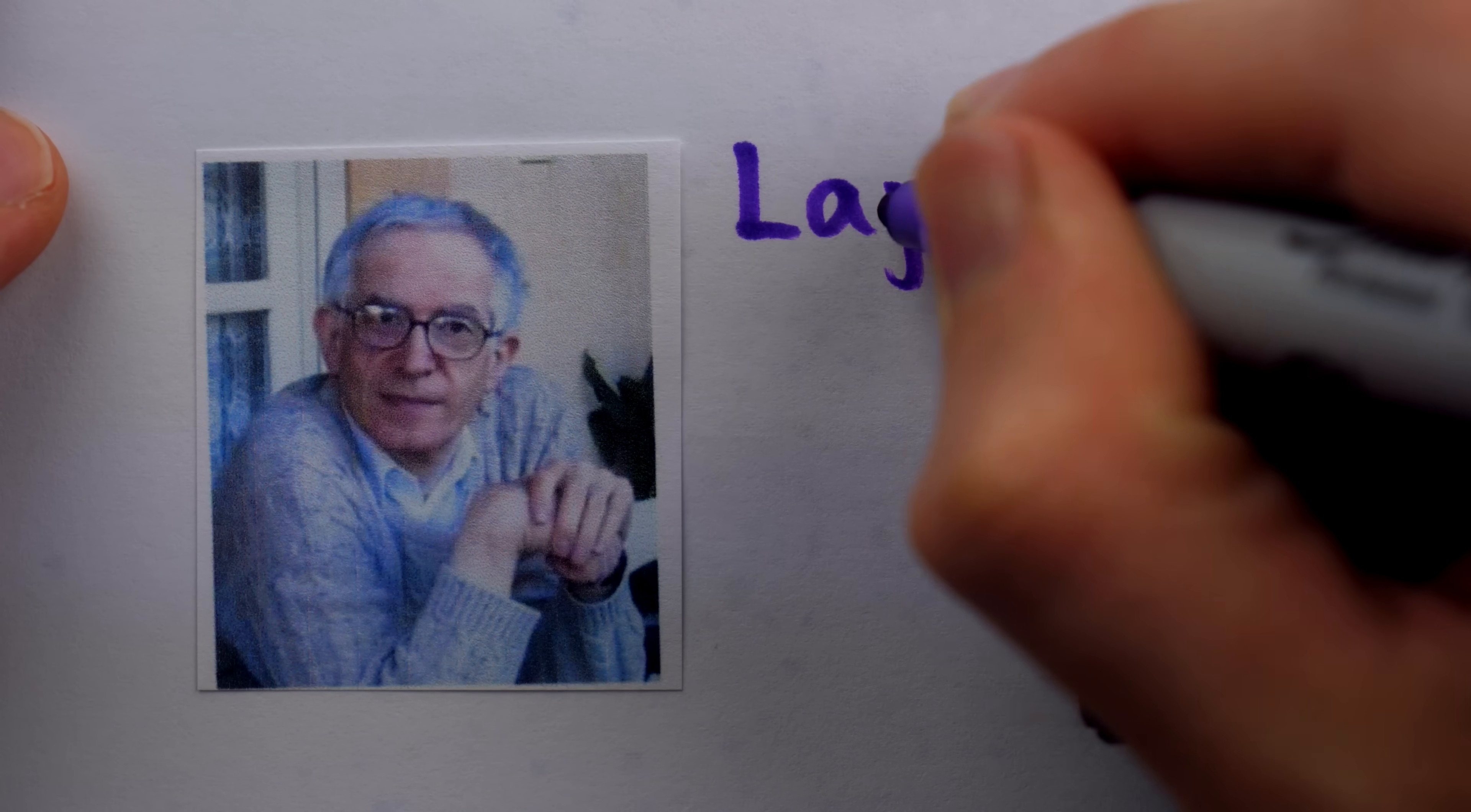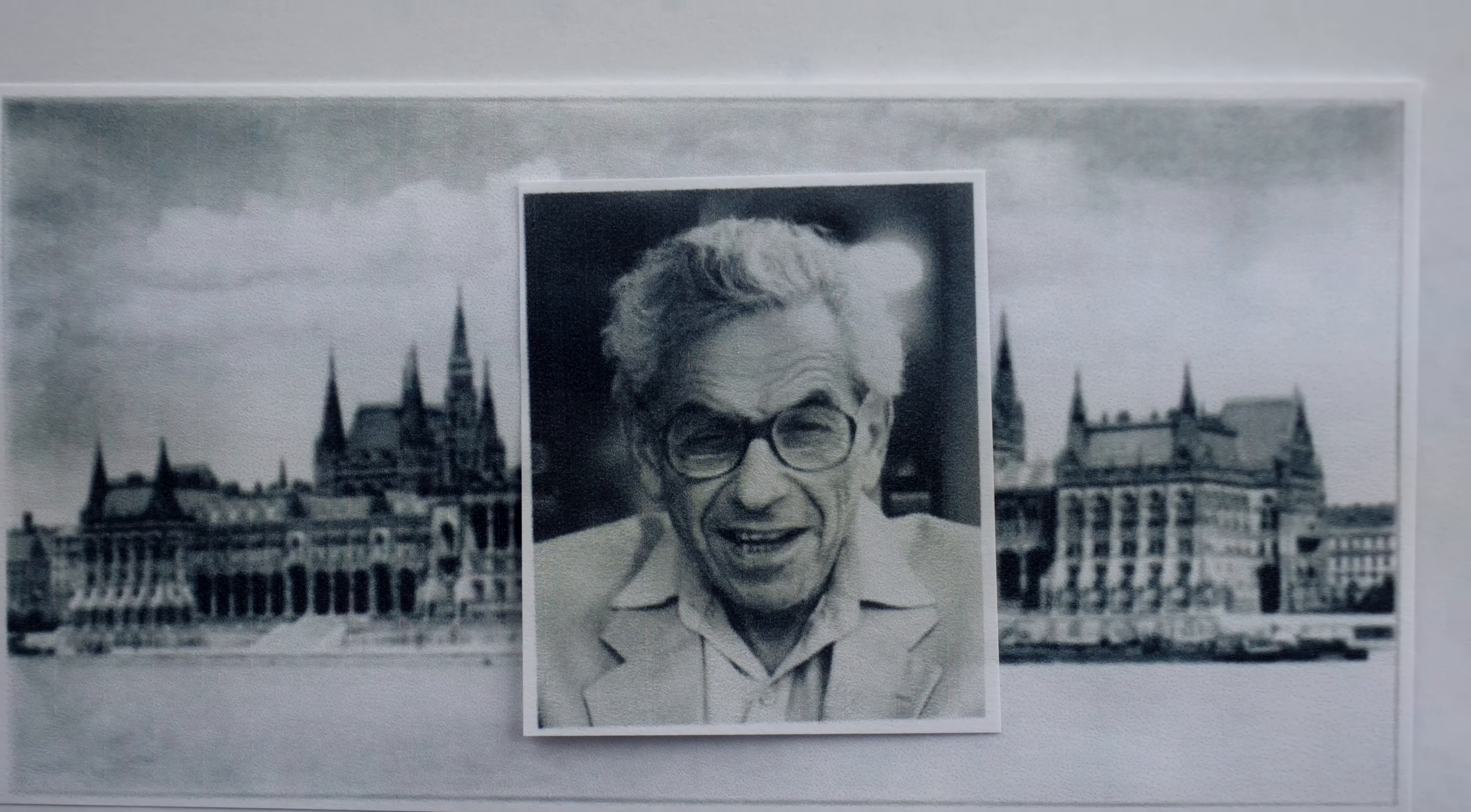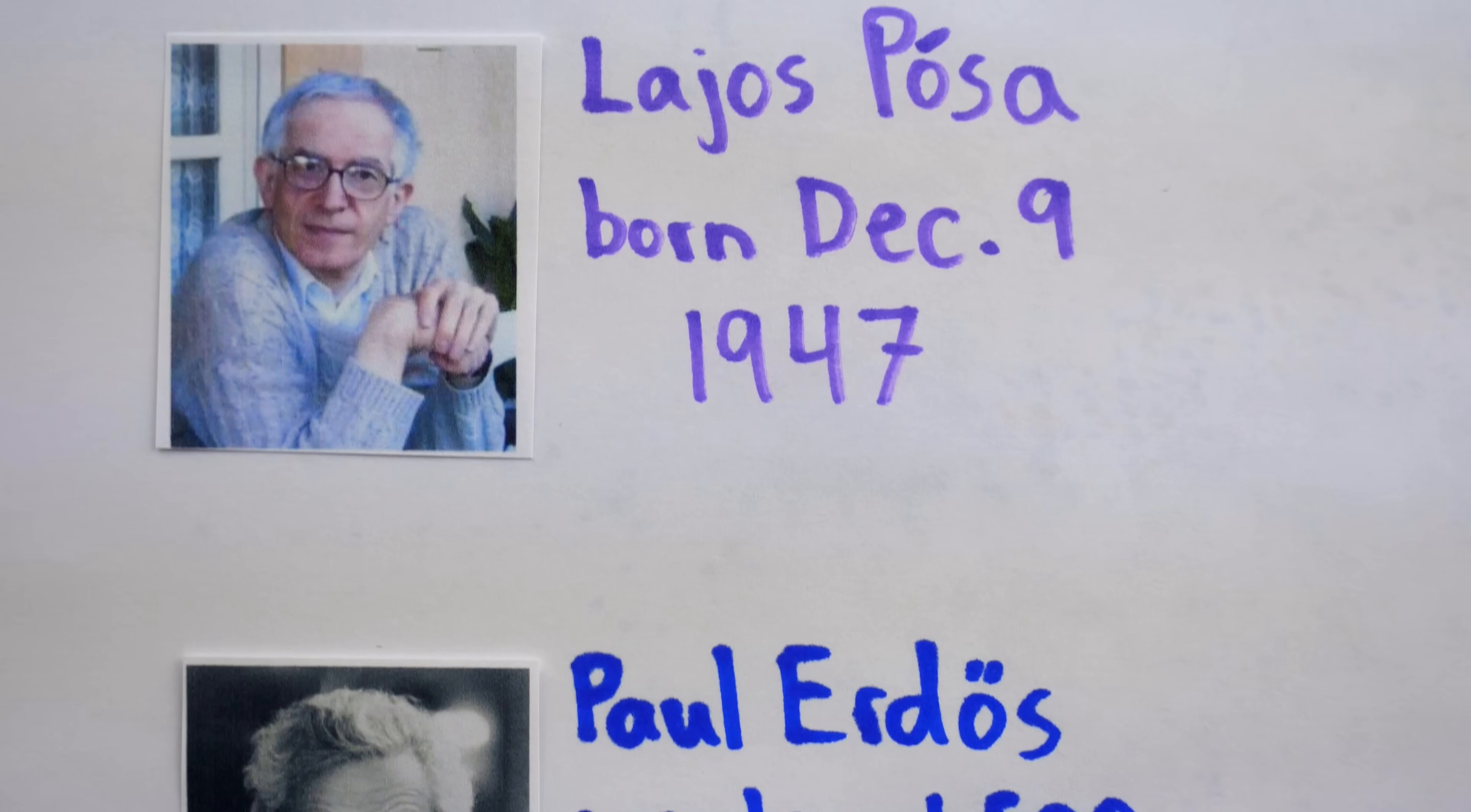This is Laos Poccia, a Hungarian mathematician born in Budapest on December 9, 1947. As far as mathematics goes, Budapest is best known as the birthplace of Paul Erdős 34 years earlier.